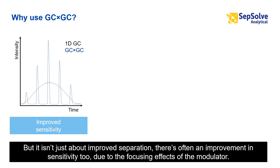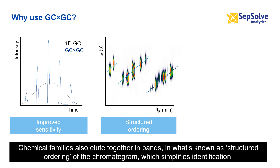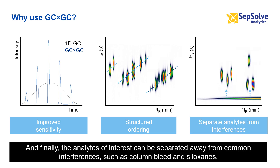But it isn't just about improved separation. There's often an improvement in sensitivity too, due to the focusing effects of the modulator. Chemical families also elute together in bands in what's known as structured ordering of the chromatogram, which simplifies identification. And finally, the analytes of interest can be separated away from common interferences, such as column bleed and siloxanes.